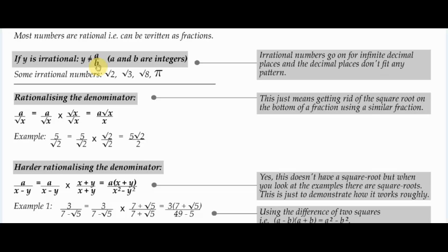The really interesting bit is irrational numbers. I like to say irrational numbers are horrible numbers — they go on for an infinite number of decimal places and don't have any particular pattern. You can't predict the next decimal digit. Numbers like pi are also irrational. Unlike recurring decimals like 0.3333 or 0.353535, which do have a pattern and can be written as a fraction like one-third, irrational numbers cannot be written as a fraction at all.